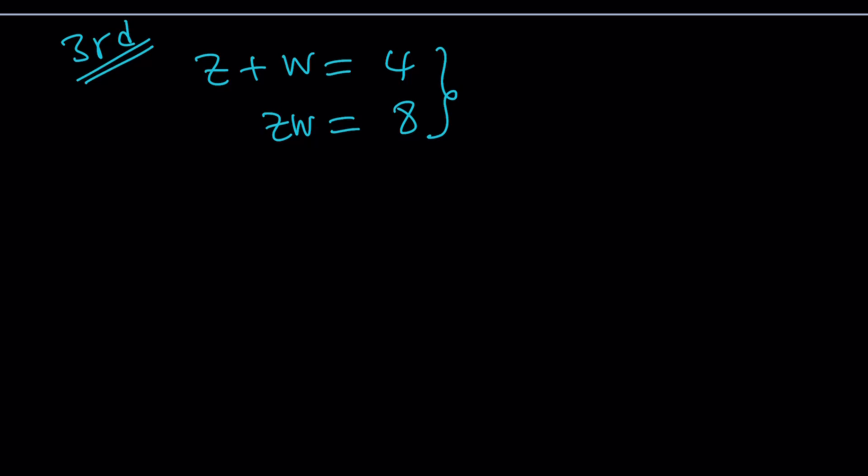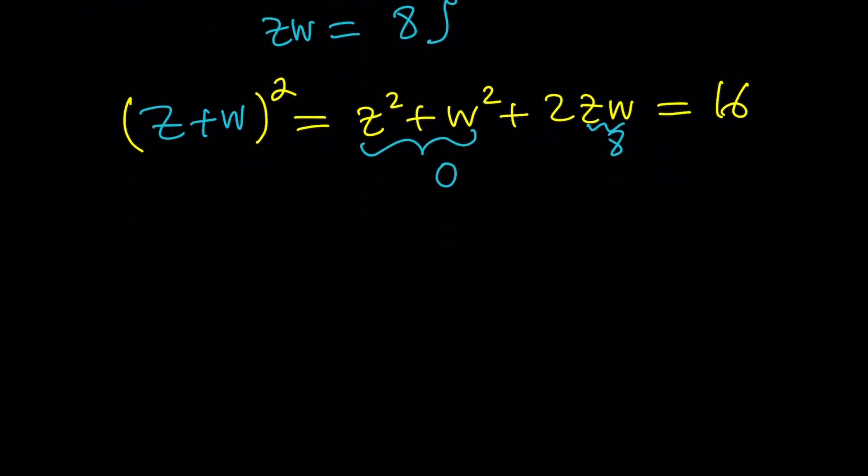I just want to instead take z plus w and square it. Because that will give us something good. You'll see. If you square this you're going to get z squared plus w squared plus 2zw. And of course it's going to be 16 because z plus w is 4. And we know zw is 8. Interesting. 2 times 8 is 16. 16 minus 16 is 0. So we get z squared plus w squared equals 0.